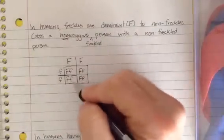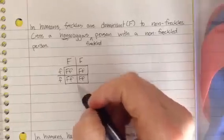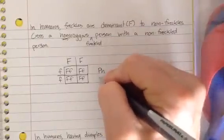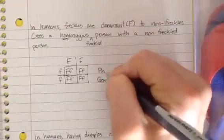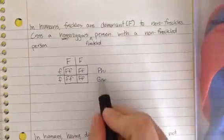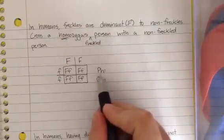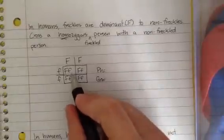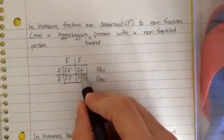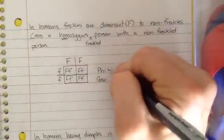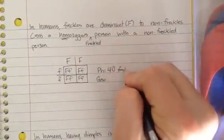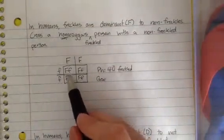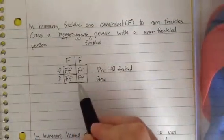So not a lot of variety in this cross. All of them end up being the same. So what we'll ask on crosses is to give the genotypic and phenotypic ratio. So again, the physical trait is what do these look like? And so our answer, we always are going to have four offspring, so our number should always equal four, is going to be four to zero freckled.